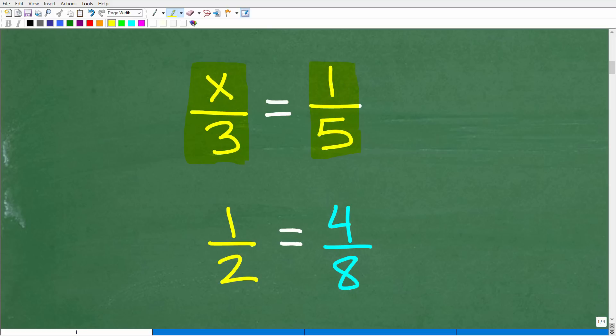One fraction here, one fraction here, an equal sign. When you have two equal fractions, you have a proportion. That's the definition of a proportion.